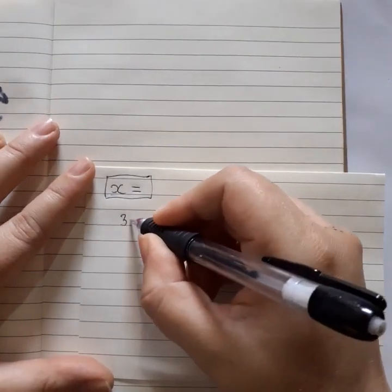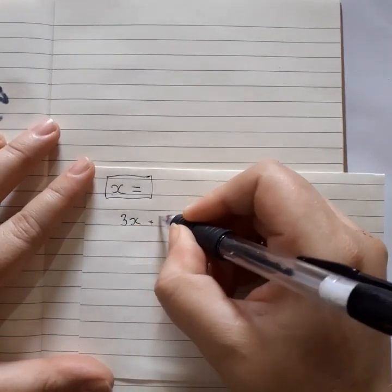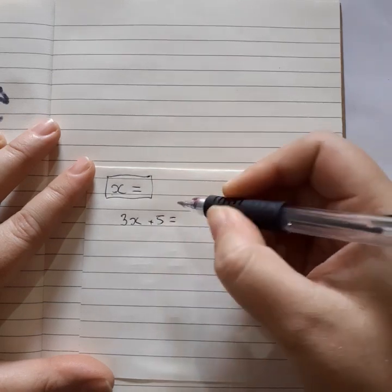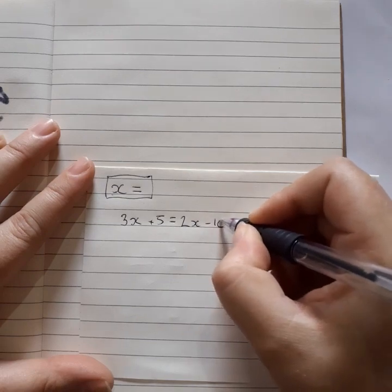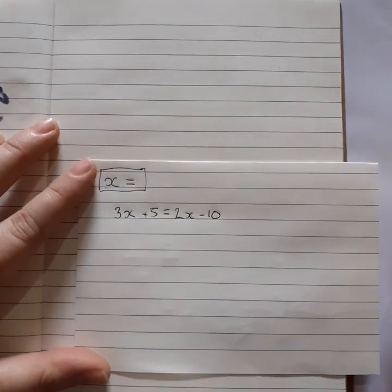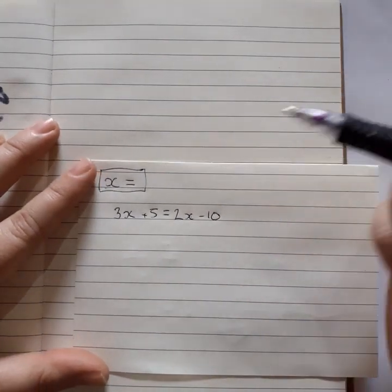All right, so let's say we've got 3x plus 5 equals 2x minus 10. Okay, now what are we going to do?